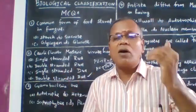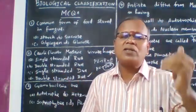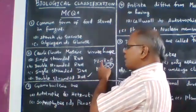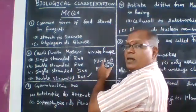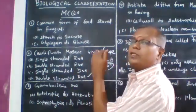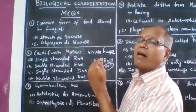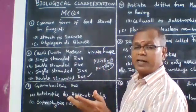Generally, RNA acts as the genetic material in plant viruses, except for cauliflower mosaic virus and rice dwarf virus, which have double-stranded DNA.